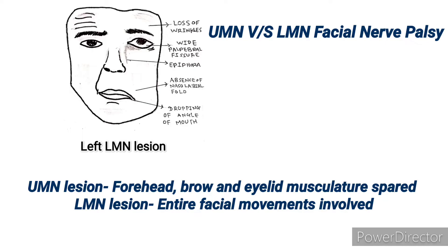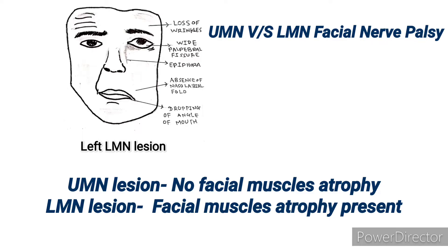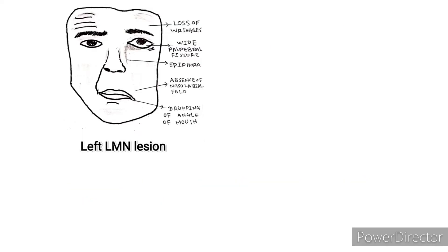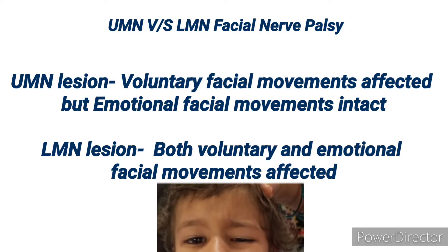The upper part of the face is spared in UMN lesion because supranuclear innervation is bilateral to the muscles of the forehead and eyes, but only contralateral to the muscles of the lower part of the face. In UMN lesion, there will be no facial muscle atrophy, while in LMN lesion, facial muscle atrophy also occurs. In UMN lesion, voluntary facial movement is affected in the opposite lower half of the face, but emotional facial movements remain intact. In LMN lesion, both voluntary and emotional facial movements are affected.